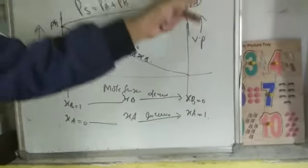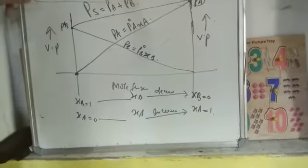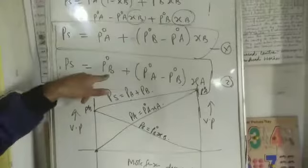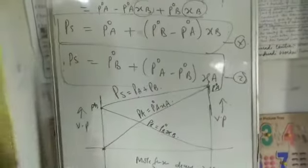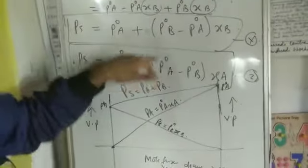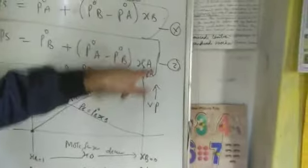Suppose if I am going to plot XA here at 1, X is equal to 1, what will be the resultant value? PS will become P0B plus P0A minus P0B. P0B will get cancelled, only P0A will remain. That is why when XA is equal to 1, at that time the vapor pressure is P0A.